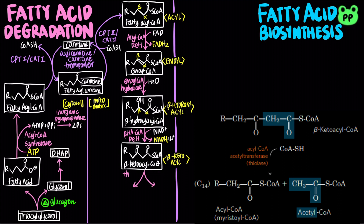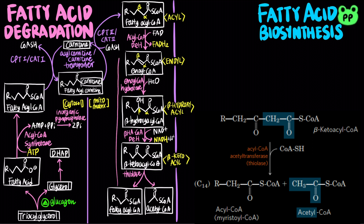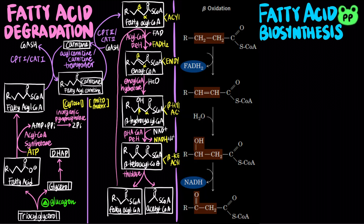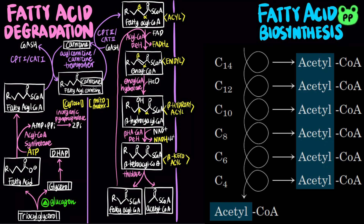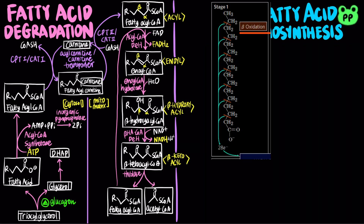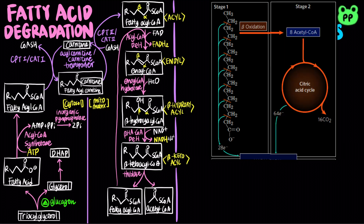Lastly, the enzyme thiolase, also known as acyl-CoA acetyl-transferase, cleaves the carboxy-terminal two-carbon fragment of beta-ketoacyl-CoA as acetyl-CoA, producing a shorter acyl-CoA that can begin a new round of beta-oxidation. Note that these four repeating steps of beta-oxidation are analogous to the last four steps of the citric acid cycle, from succinate to malate. Saturated fatty acids repeat beta-oxidation to release acetyl-CoA from the carboxyl end. For example, the 16-carbon palmitate undergoes seven rounds of beta-oxidation to produce eight acetyl-CoA.